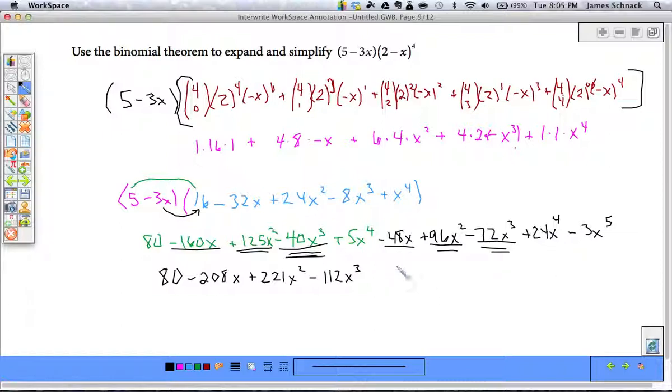I have 5x to the fourth plus 24x to the fourth. That's plus 29x to the fourth. And lastly, I have minus 3x to the fifth. And there we go. We've worked this out.